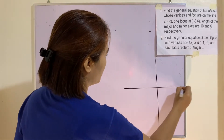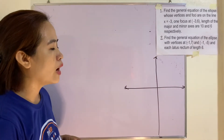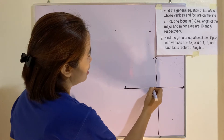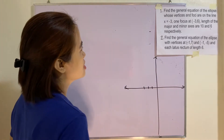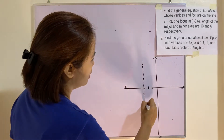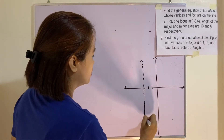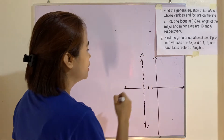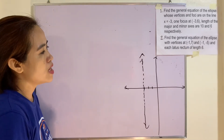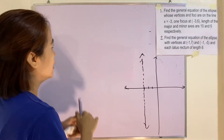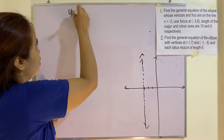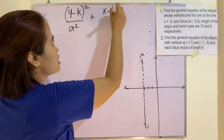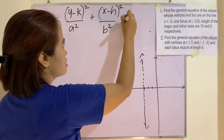Let us illustrate first the problem. It says here that our foci and vertices lie on x = -3. This means our ellipse has a major axis parallel to the y-axis, and we use the formula: (y - k)² / a² + (x - h)² / b² = 1.